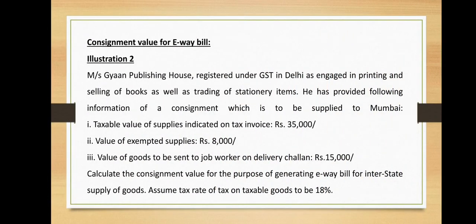The next illustration covers consignment value for e-way bill. Measures Gan, a publishing house registered under GST in Delhi, is engaged in printing and selling of books as well as trading of stationery items. He has provided the following information of a consignment to be supplied to Mumbai: taxable value of the supply indicated on the tax invoice is rupees 35,000; value of exempted supplies is rupees 8,000; and value of goods to be sent to a job worker on delivery challan is rupees 15,000.